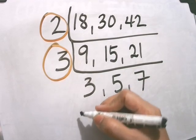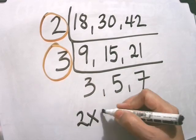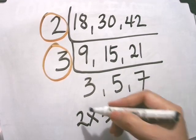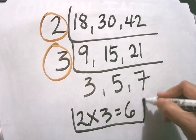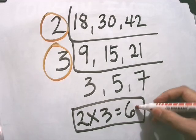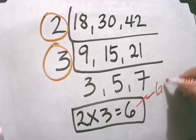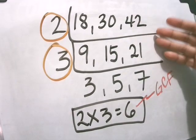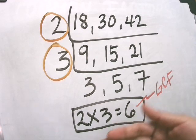To get the GCF, we have to multiply 2 times 3. 2 times 3 equals 6, so the GCF of 18, 30, and 42 is 6.